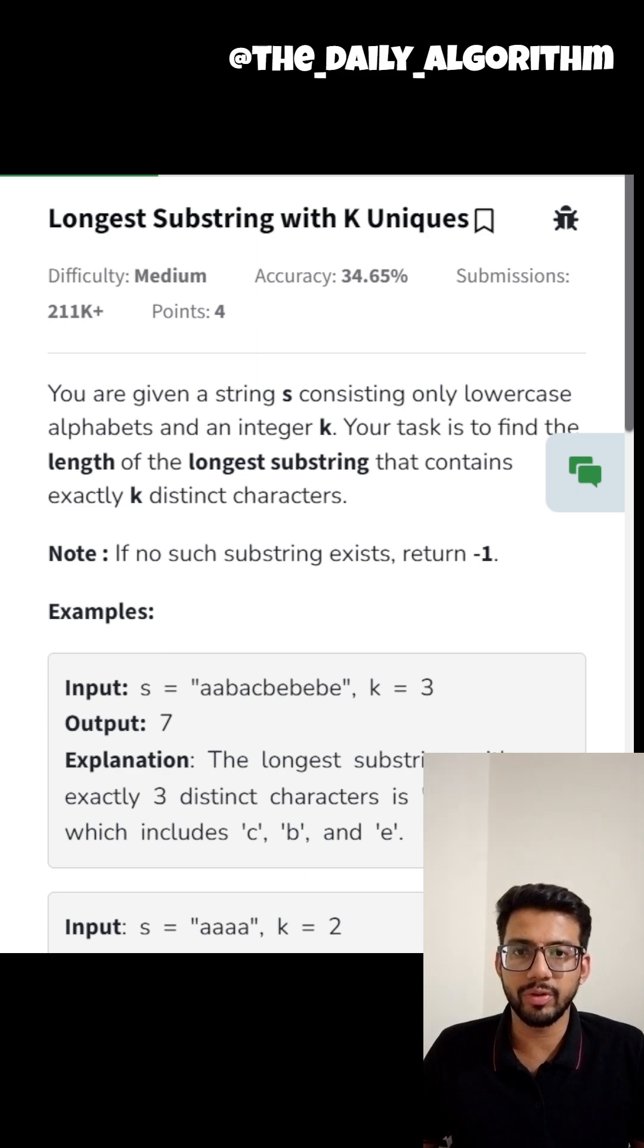We have to use a map to store frequency of elements between the left and the right pointers. And the map's size will tell us the number of unique elements we have between these two pointers.